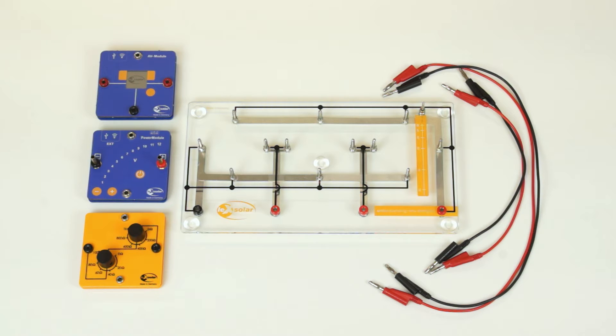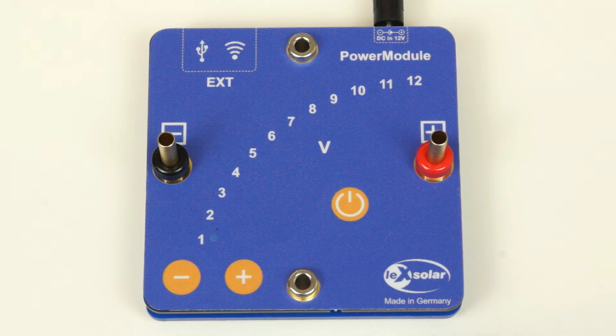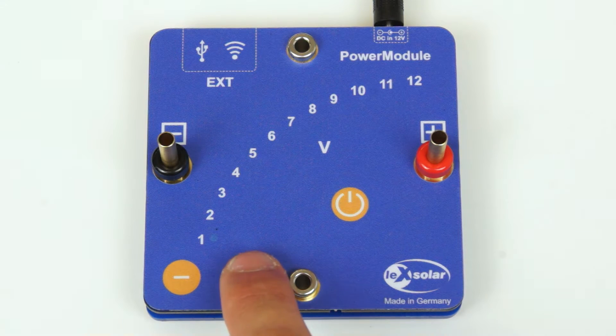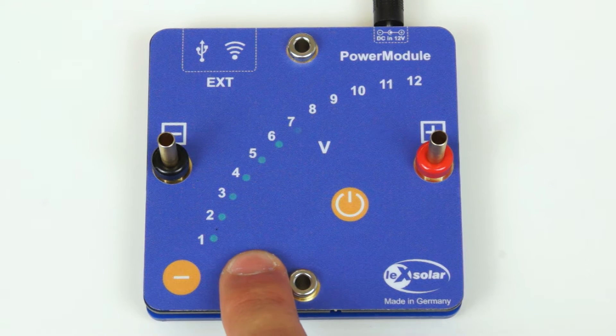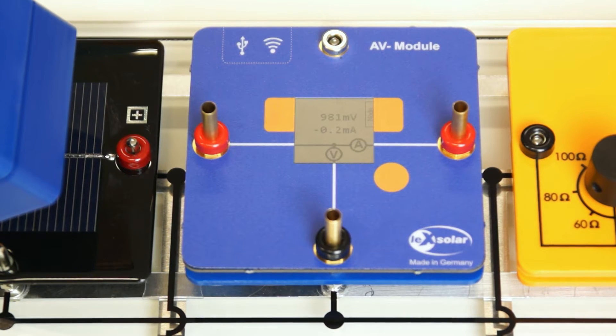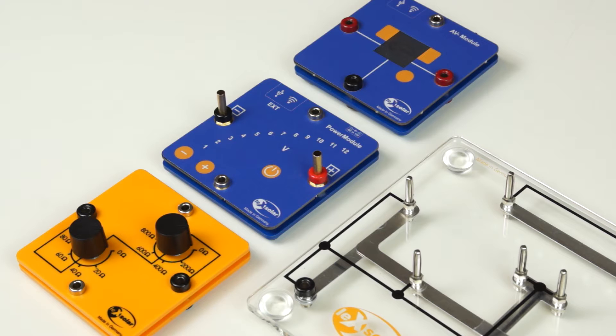Quantitative experiments for secondary school can be carried out with the large base unit which has three module slots. The power module can be used for the stabilized power supply from 0 to 12 volt and for measuring the current and voltage. The AV module can be used, thereby data logging is possible under repeatable conditions.